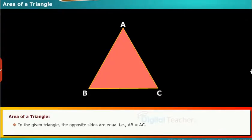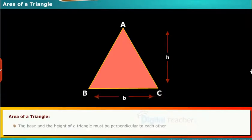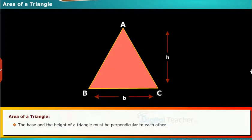Area of a triangle. In the given triangle, the opposite sides are equal. That is, AB is equal to AC. The height of a triangle is denoted by h, and the breadth or base of a triangle is denoted by b. The base and the height of a triangle must be perpendicular to each other.